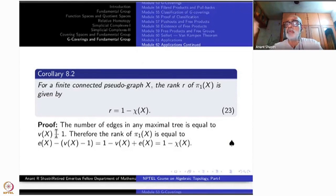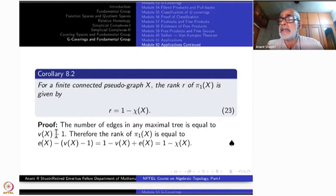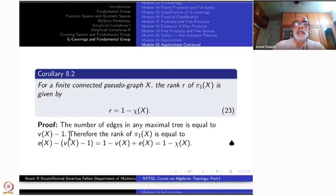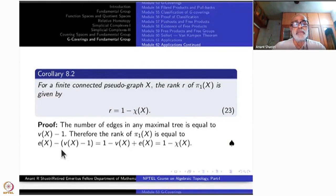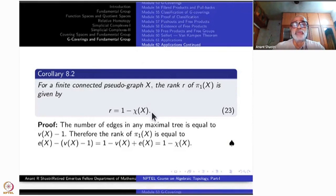The proof is straightforward. The number of edges in any maximal tree equals V(X) minus 1. With n vertices you need exactly n minus 1 edges to connect them without forming a cycle. Therefore the rank of π₁(X) equals E(X) minus (V(X) minus 1), which equals 1 minus V(X) plus E(X), which is 1 minus χ(X). The formula is proved.